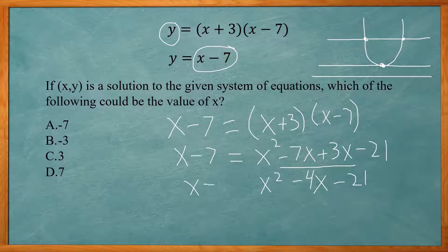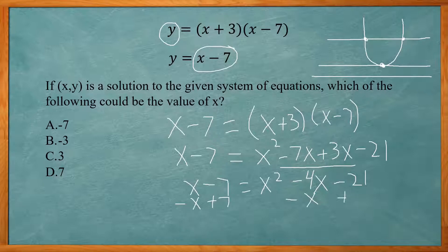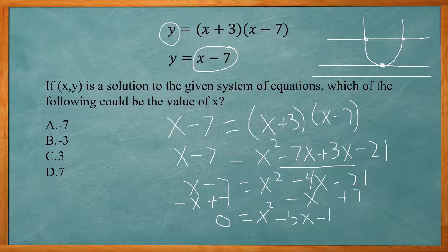So I have x − 7 on the left and x² − 4x − 21 on the right. Now I want to move everything to the right side, so I subtract x and add 7 to both sides, giving me: 0 equals x² − 5x − 14.